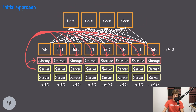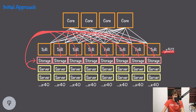The only way to fix this with the current approach, since we're limited by switch size, is to add more core switches. However, this would be a wiring nightmare. To 10x the bandwidth, we'd need 40 core switches, and every single top-of-rack switch would have to be connected to all 40, meaning 40 cables times 512 racks — that's a lot of cables.